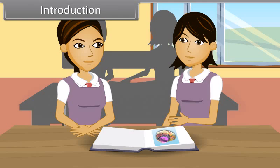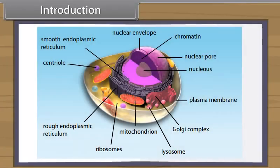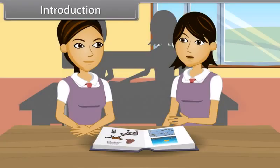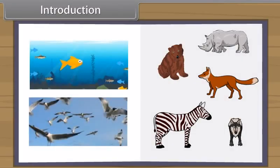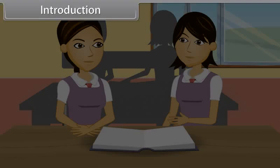Animals are eukaryotic, multicellular and heterotrophic organisms. Animal cells do not have cell walls. Most of the animals are mobile. Animals are aquatic, e.g. fishes, or terrestrial, e.g. reptiles, mammals, etc., or aerial, e.g. birds, on the basis of their habitat.